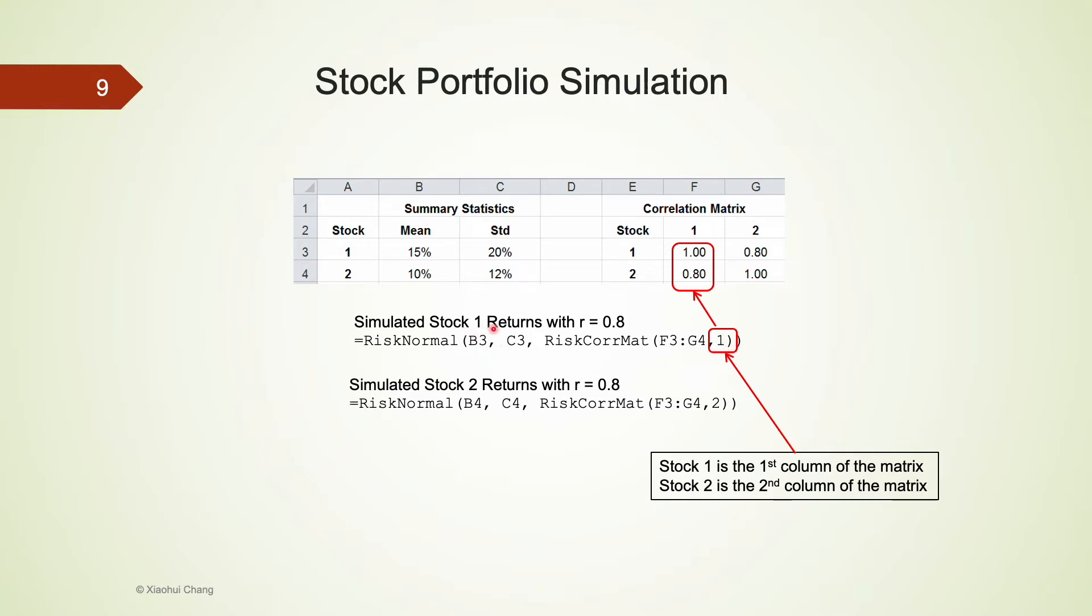For stock 1, we enter 1 here because the first column of the correlation matrix contains information for stock 1. For stock 2, we would use 2 here because it is the second column of the correlation matrix that contains information for stock 2.